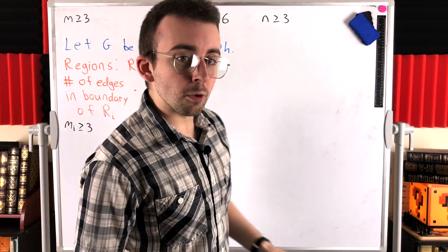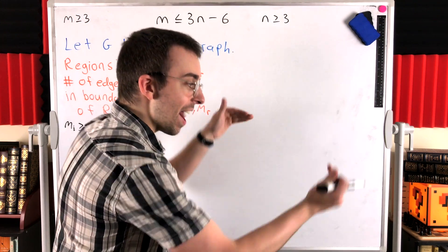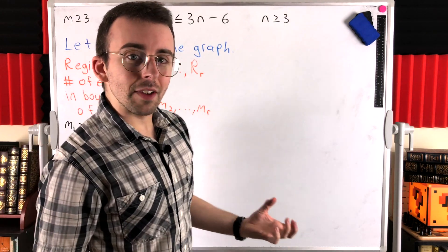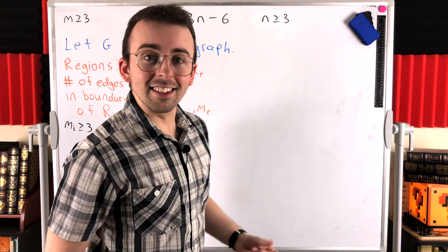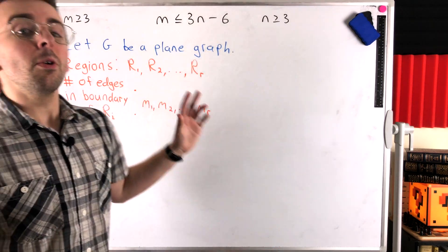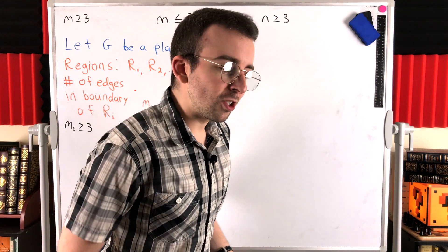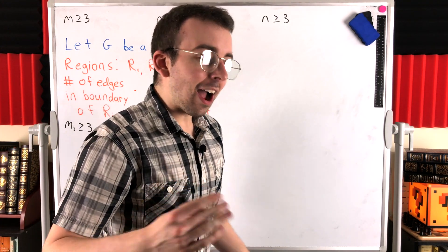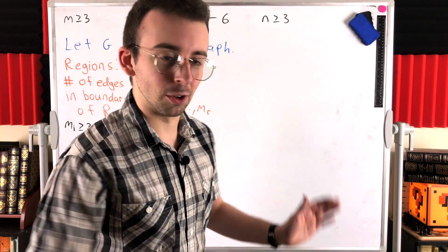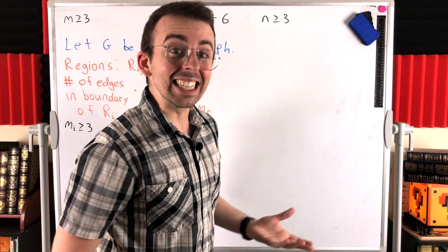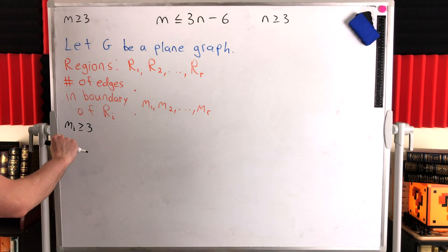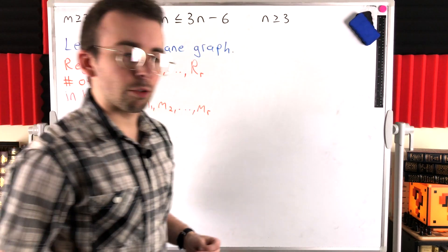Similarly, if the exterior region's boundary has one edge, that one edge would have to enclose all the other edges — otherwise those edges would also be incident to the exterior region. So whether we suppose the boundary has zero, one, or two edges, those edges would have to enclose a region, which requires at least three edges. That's clearly not possible. The exterior region also has a boundary with at least three edges.